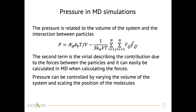Now we see how we calculate pressure in molecular dynamics simulation. The pressure is related to the volume of the system and to the interaction between particles. It is calculated from a first term representing the kinetic energy contribution — twice the kinetic energy divided by the volume V — and a second term called the virial, which describes the contribution due to forces between particles and can be easily calculated during the force calculation phase of MD. From this we can extract that the pressure can be controlled by varying the volume of the system and scaling the positions of the atoms.